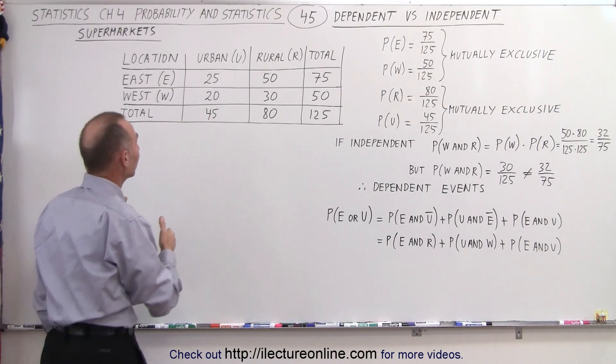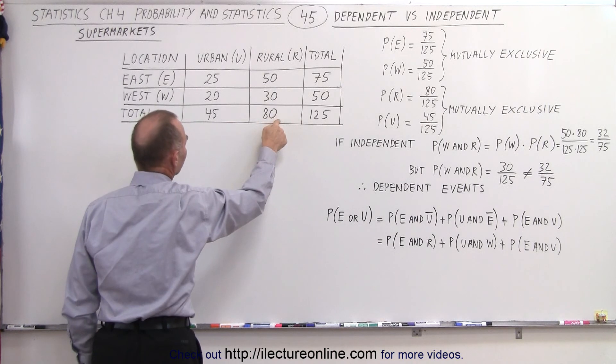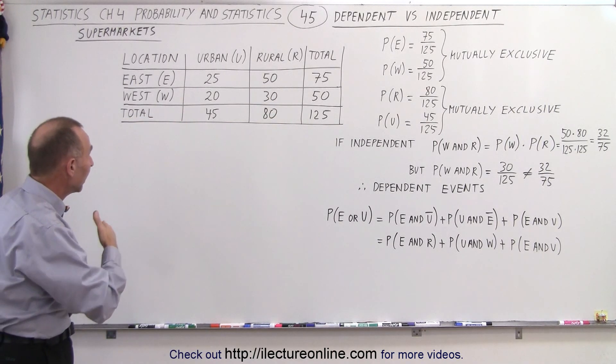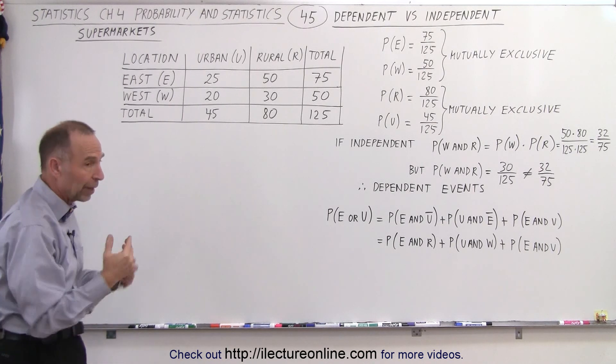We can also classify them as either urban, 45 of them, or rural, 80 of them. So you can see that supermarkets can be both urban and in the east and urban in the west, rural in the east and rural in the west.